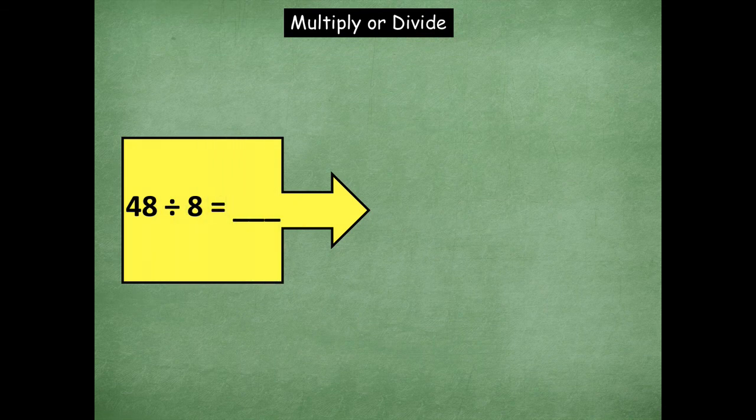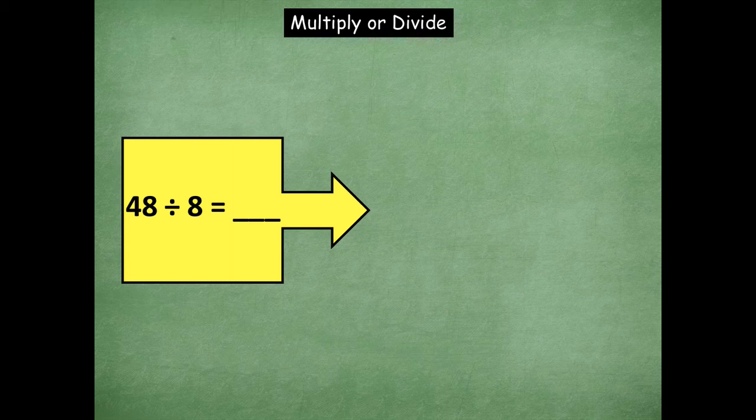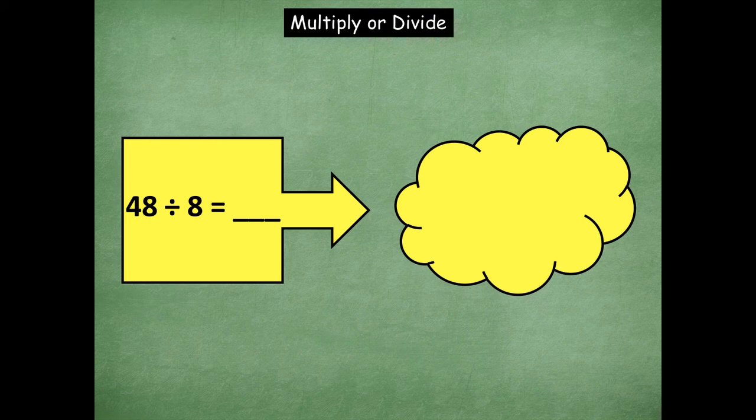48 divided by 8. Remember, you can skip count and use multiplication to solve this problem as well. So go ahead and do that. If you need more time, click pause and then play when you're ready to go over it. Okay. So 48 divided by 8 equals 6.